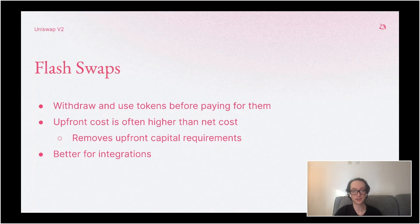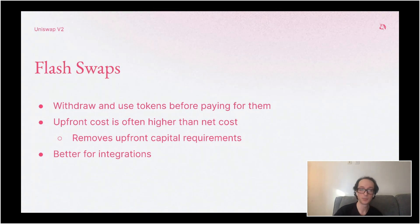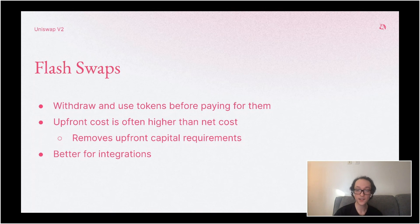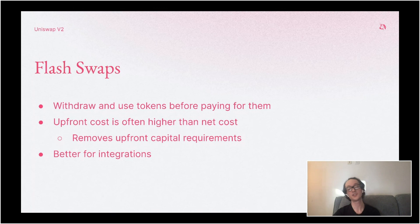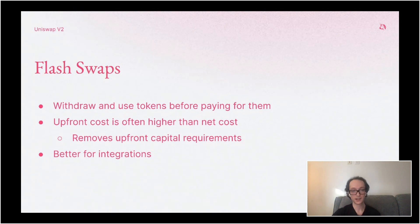Another interesting new feature is flash swaps. The idea is that there are transactions that can occur with a high upfront cost but a very low net cost — or even a negative net cost. For example, say you see an opportunity to sell one ETH for 200 DAI on Uniswap, and then sell that 200 DAI for 1.1 ETH on another trading platform. That has a very low net cost — you actually make money on the transaction. But the upfront cost is that you need to have the ETH to initiate. The idea is to remove the upfront cost as long as the net cost is low. Anyone using Uniswap V2 can withdraw as much as they want of any token across any pair, do anything they want with it, and as long as by the end of the transaction they pay for them or return them, this lowers the upfront capital requirements and makes integrations a lot easier.